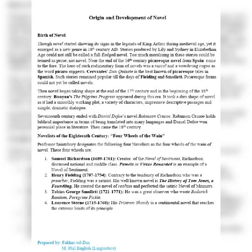Such stories remained popular till the days of Fielding and Smollett, so we find that Fielding and Smollett have some sort of ground in the field of the novel. Then came the 17th century. We say that the 17th century marks the beginning of the shape of the novel. Towards the beginning of the 18th century as well, John Bunyan is the writer — he wrote The Pilgrim's Progress in the 17th century. Though we cannot still call it a full-fledged novel, it took somewhat a little shape of one.